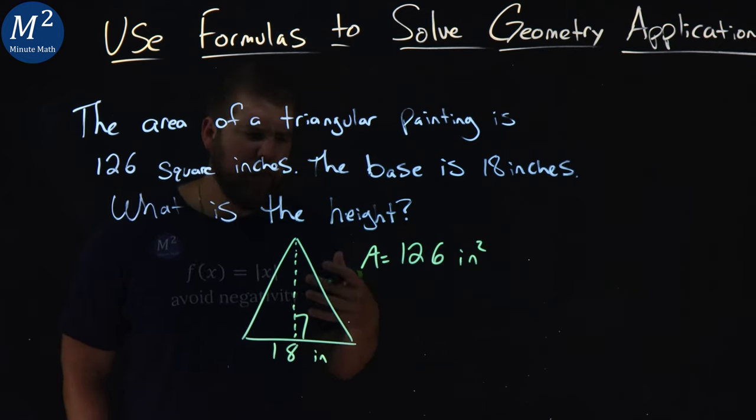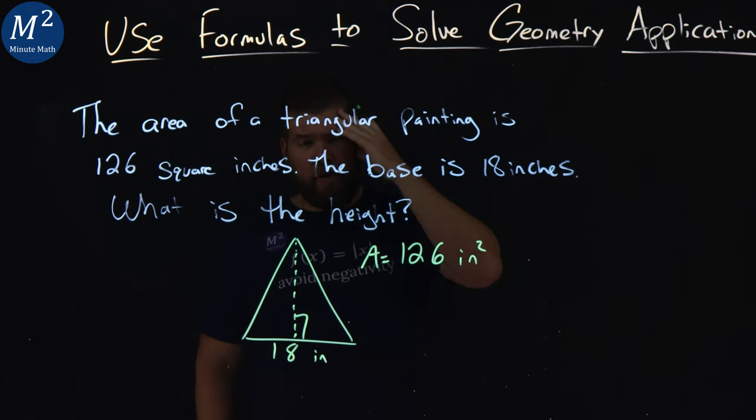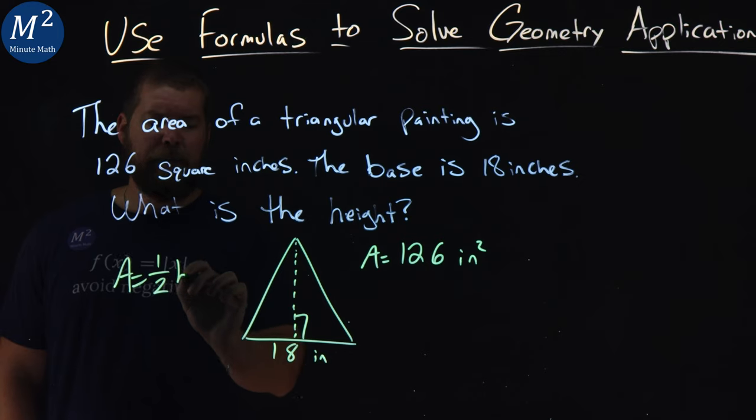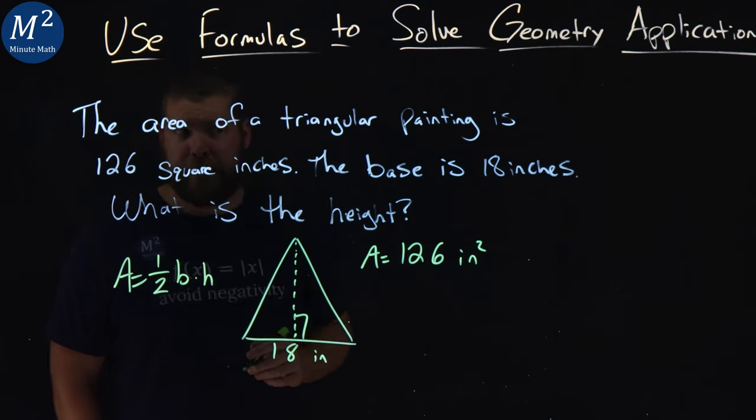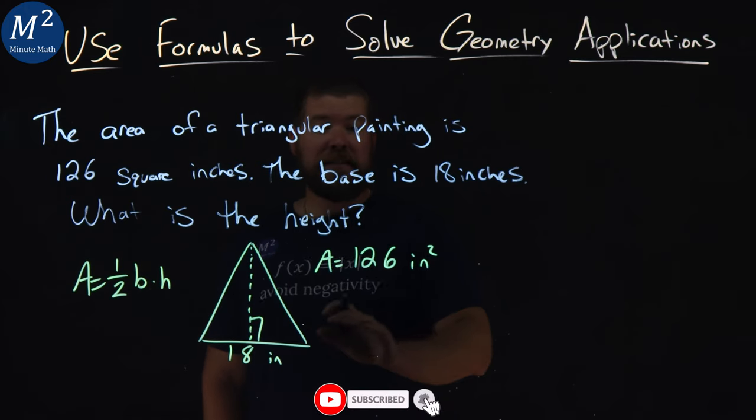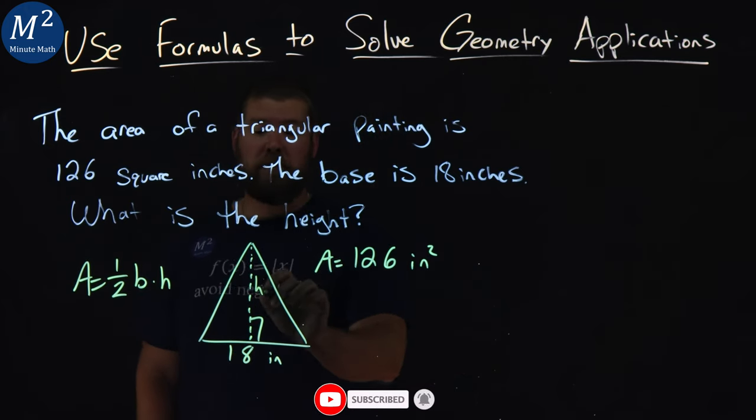What's our formula for the area of a triangle? These are things we have to know and be able to apply. Area of a triangle is one-half base times height. Let's take that formula and plug in what we know to find what we're missing, the height.